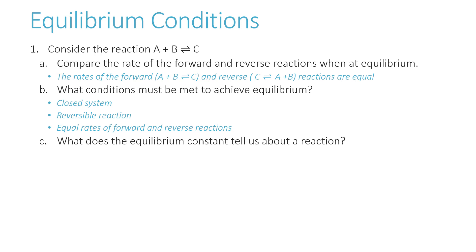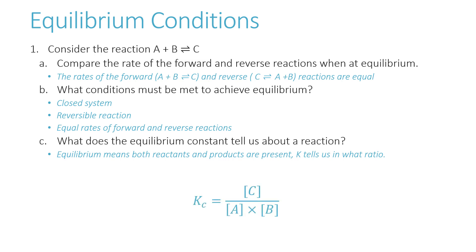What does the equilibrium constant tell us about a reaction? Equilibrium means we have a mixture of both reactants and products present. K tells us in what ratio. The equilibrium constant K is always products over reactants, and any coefficients become exponents. If K has a large value, we have mostly products. If K is a small value, the mixture is mostly reactants.